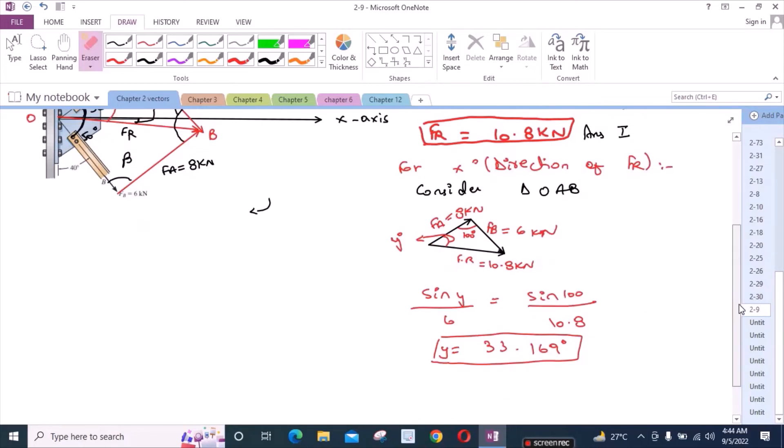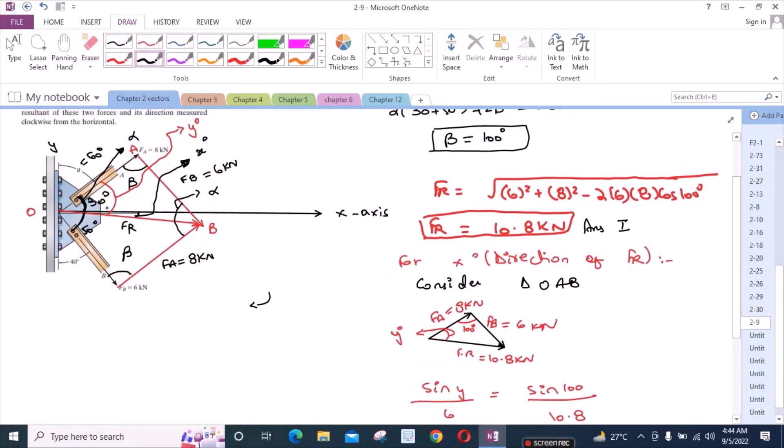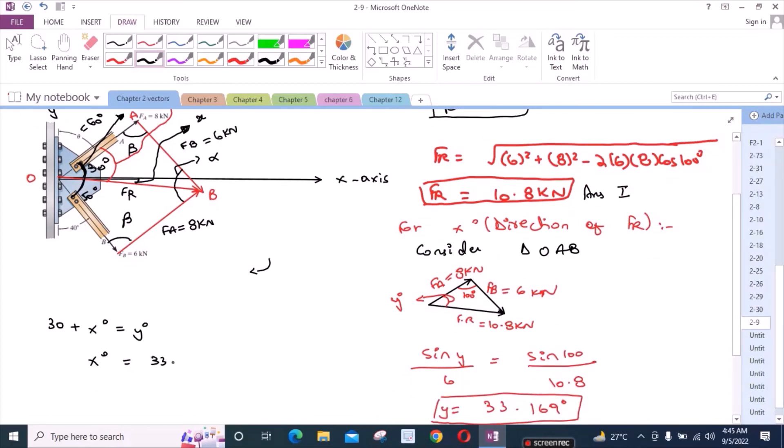Now we have to find the X degrees. From the figure we can write that we have 30 plus X degrees equals Y degrees. So X degrees, our objective, equals Y degrees which is 33.169 minus 30. X degrees equals 3.169 degrees. This is our second answer.